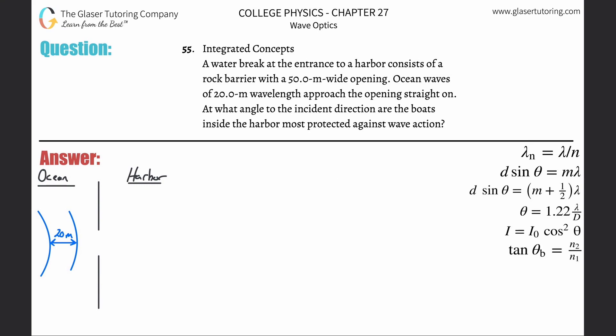Number 55, Integrated Concepts. A water break at the entrance of a harbor consists of a rock barrier with a 50-meter wide opening. Ocean waves of 20-meter wavelength approach the opening straight on. At what angle to the incident direction are the boats inside the harbor most protected against wave action?